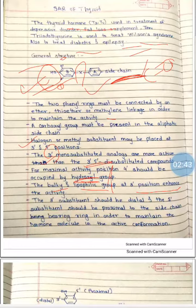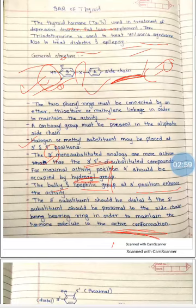The 3' substituent should be distal and the 5' substituent should be proximal to the side chain bearing ring in order to maintain the hormone molecule in the active conformation. The 3' substituent should be distal and the 5' substituent should be proximal to the side chain bearing ring.